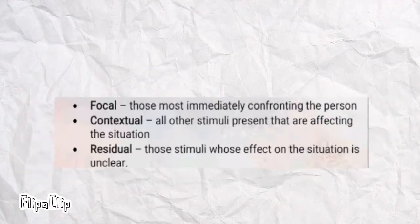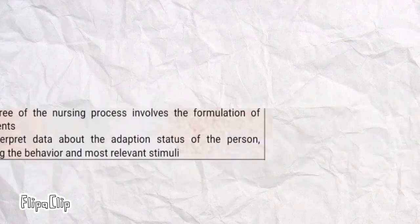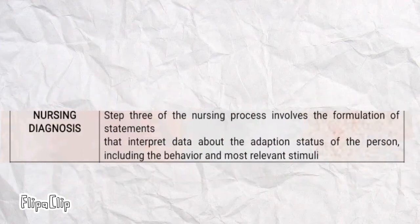Second, assessment of stimuli — assess the stimuli and categorize them as focal, contextual, or residual. Focal stimuli are those most immediately confronting the person. Contextual stimuli are all other stimuli present that are affecting the situation. Residual stimuli are those whose effect on the situation is unclear. Third, nursing diagnosis — make a statement or nursing diagnosis of the person's adaptive state. Fourth, goal setting — set a goal to promote adaptation.